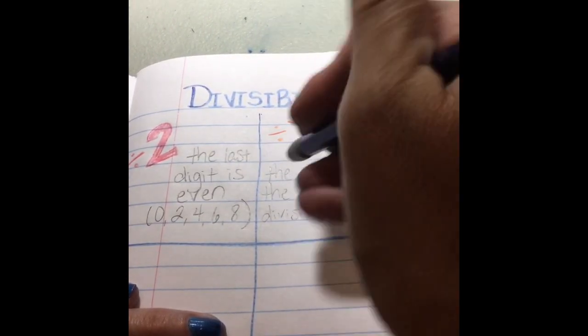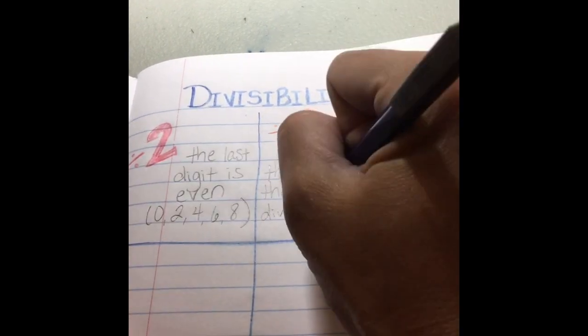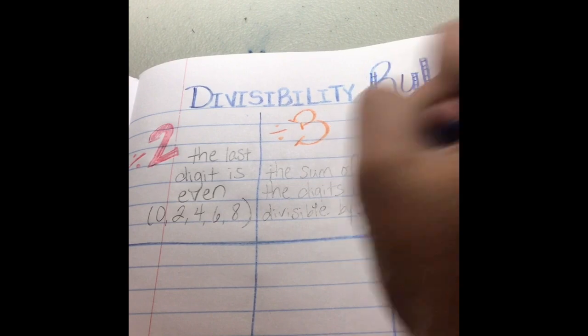I think I misspelled divisible. It's B-L-E there at the end. Divisible by three.